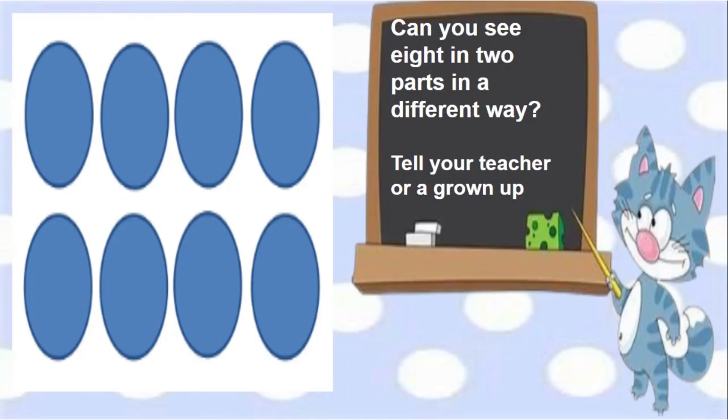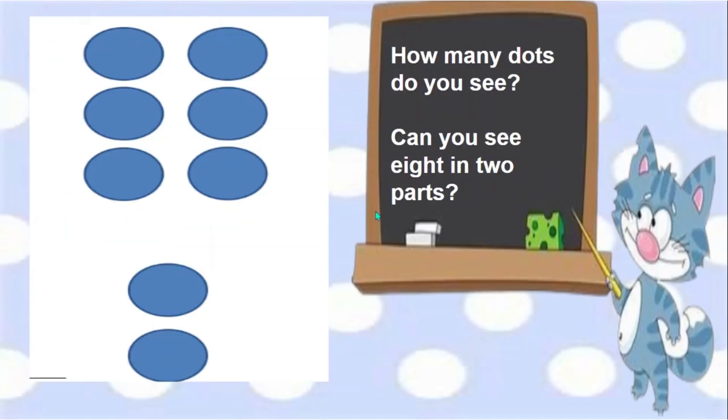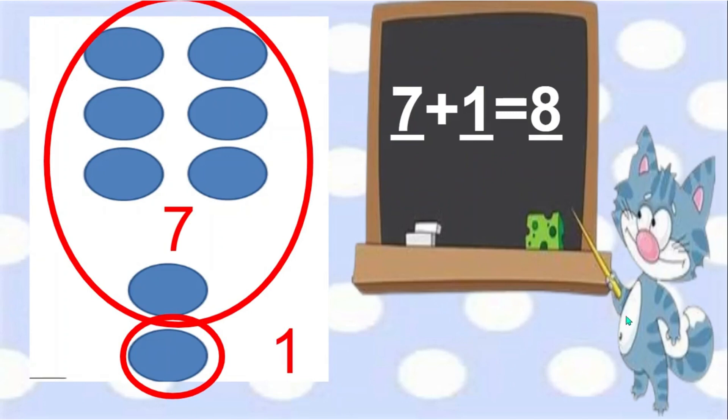Can you see it in a different way? Tell your teacher. Take a look at this dot card. How many dots do you see? Can you see it in two parts? I saw seven dots and one dot. Seven and one more is eight.